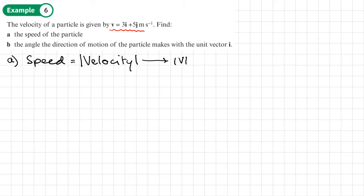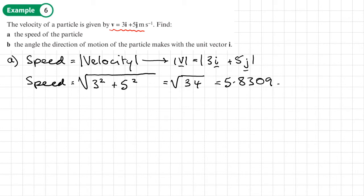The speed of the particle is equal to the modulus of the velocity, the size of the velocity. We're going to work out the modulus of 3i plus 5j, which means doing Pythagoras on the 3 and 5. The speed is going to be equal to the square root of 3 squared plus 5 squared. That's the square root of 34, and that's 5.8309. We want to give our answer to three significant figures, so we'll say 5.83 meters per second.